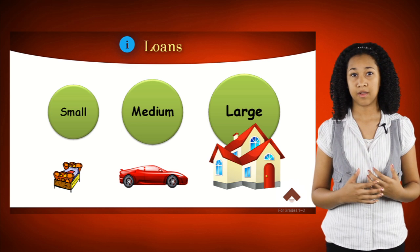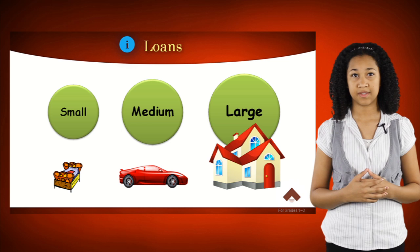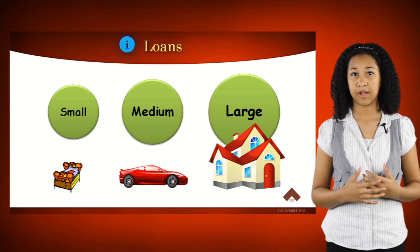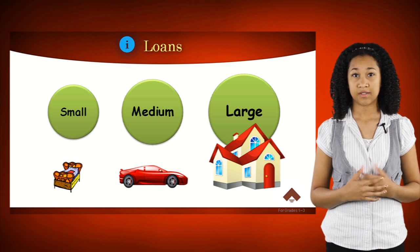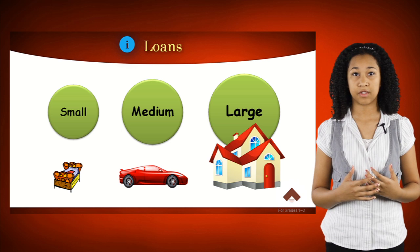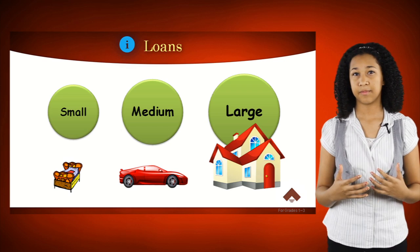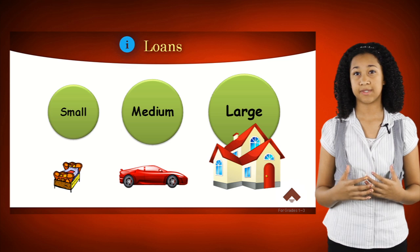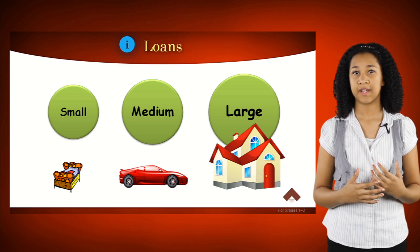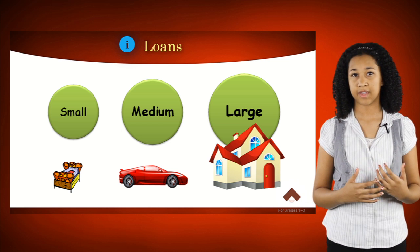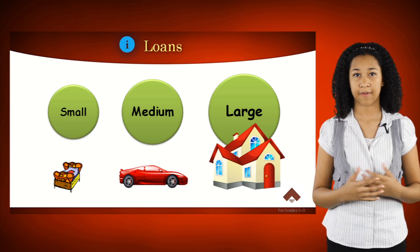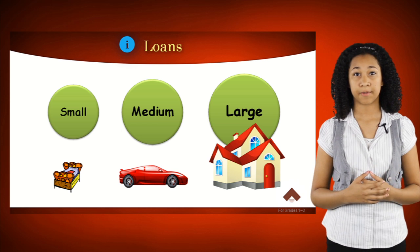There are small, medium, and large loans. Small loans are loans that you can pay back in under a year. Some examples are loans for buying furniture and electronics. Medium loans sometimes take a little longer to pay back, usually about three to five years. Some examples are buying a car or purchasing expensive jewelry.